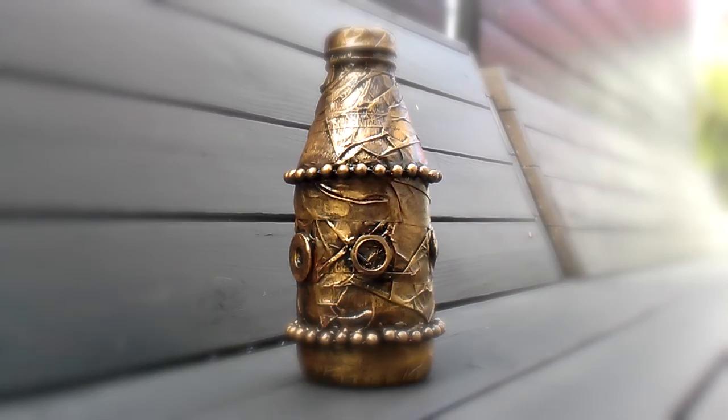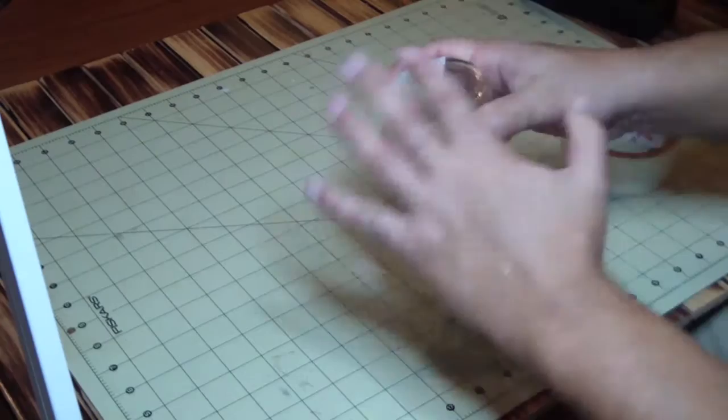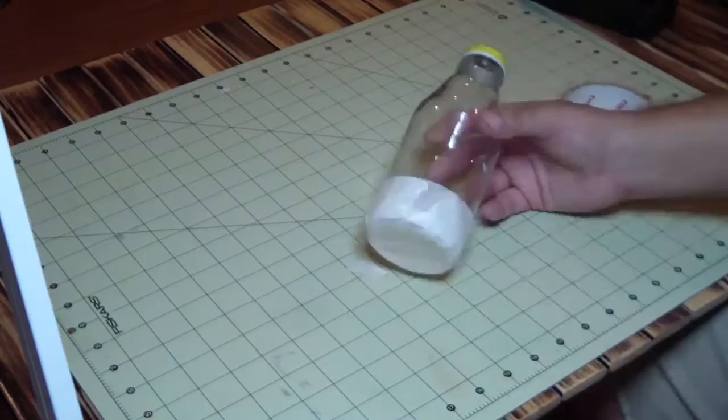Alright, so let's make this altered bottle. We'll take a Yoohoo, which you might want to drink first. Remove the label and add some tape all around the bottle and squish it down onto the glass. Make it nice and tight.